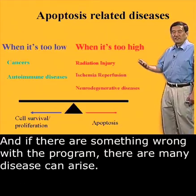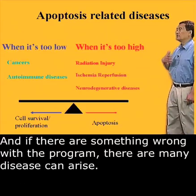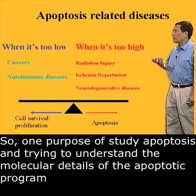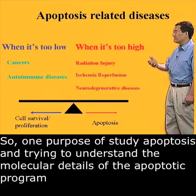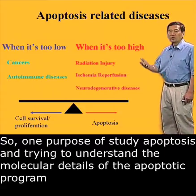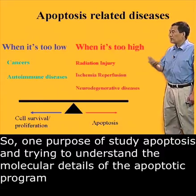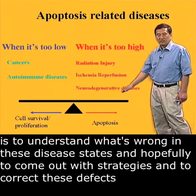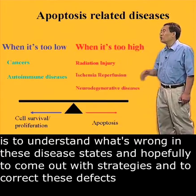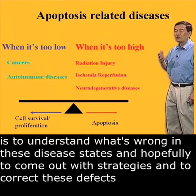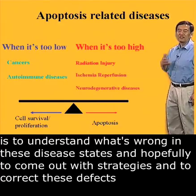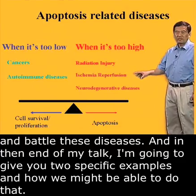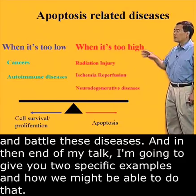If there is something wrong with the apoptotic program, many diseases can arise. One purpose of studying apoptosis and understanding the molecular details of the apoptotic program is to understand what's wrong in these disease states, and hopefully to come up with strategies to correct these defects and battle disease. At the end of my talk, I'm going to give you two specific examples of how we might be able to do that.